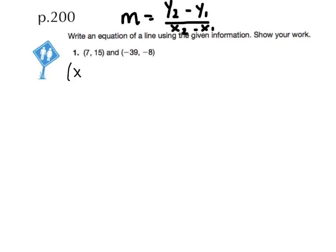Every ordered pair always has an x value and a y value. X will always be first and y will always be second. This is our first ordered pair, so our 7 is going to be our x sub 1 and 15 will be y sub 1. Our second ordered pair will then be x sub 2 with y sub 2 after it. When we put our values into our formula, we're going to have negative 8 minus 15 over negative 39 minus 7.